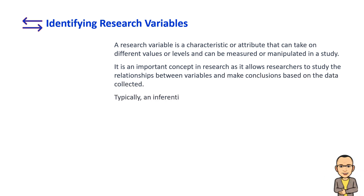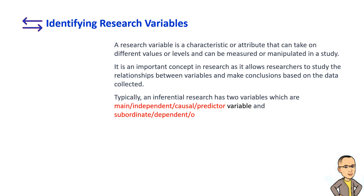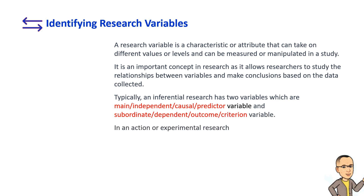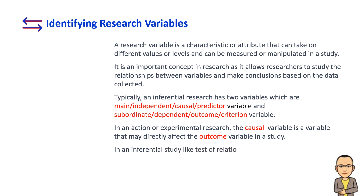Typically, an inferential research has two variables: the main, independent, causal, or predictor variable, and the subordinate, dependent, outcome, or criterion variable. In an action or experimental research, the causal variable is a variable that may directly affect the outcome variable in a study.